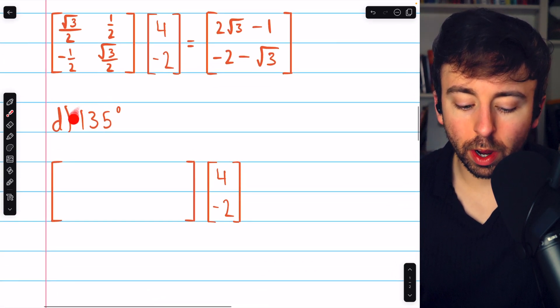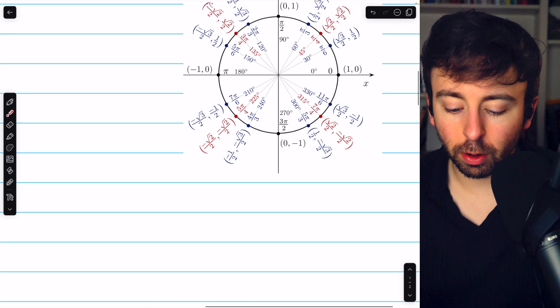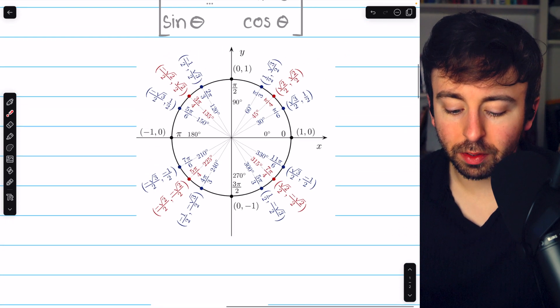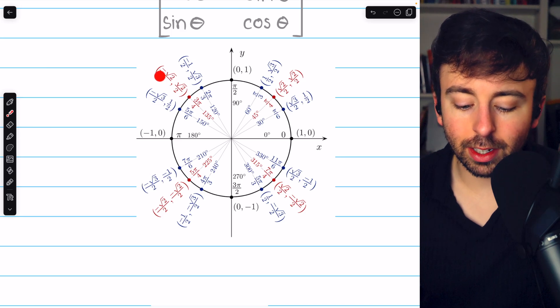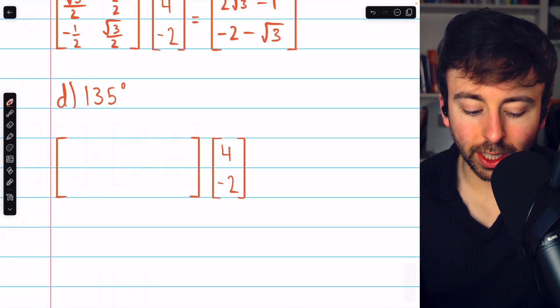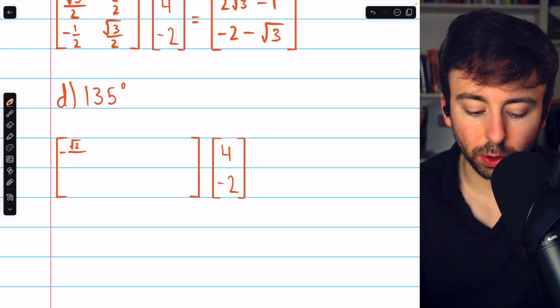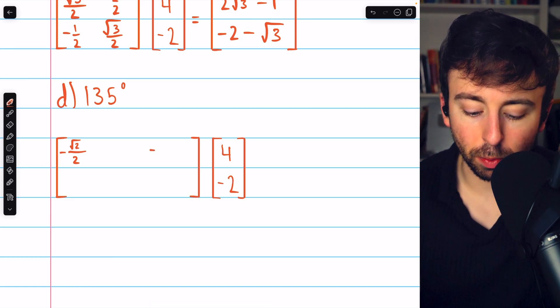Finally, a rotation of 135 degrees. Coming to the unit circle once more, 135 degrees is at 3π/4. Cosine is -√2/2, and sine is √2/2. Filling in the standard matrix, we have cosine, which is -√2/2, and then negative sine, which is also -√2/2.